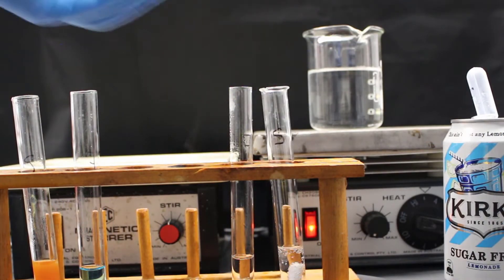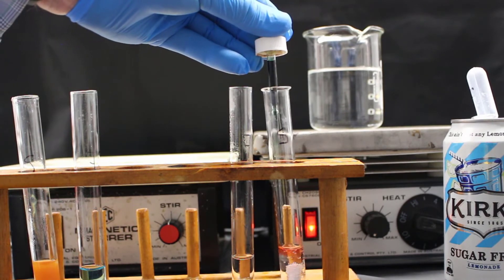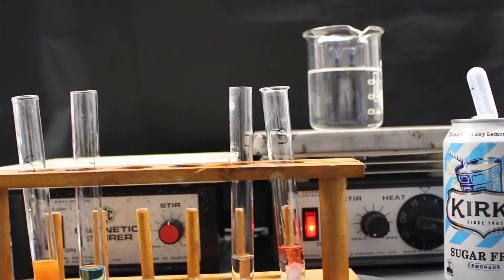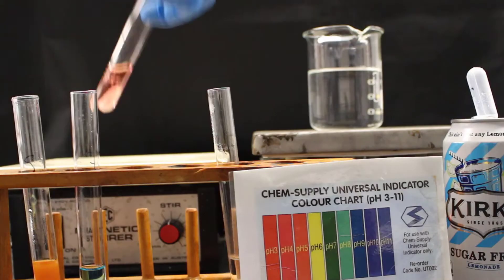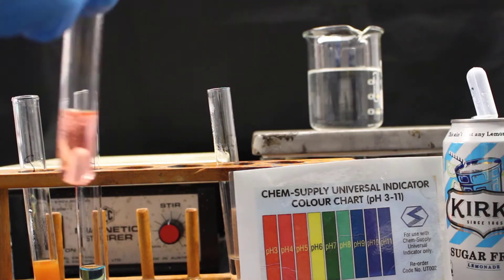After 5 minutes in the water bath, we need to neutralize the acid. So to do that, we add a few drops of universal indicator and then add a base, sodium hydroxide.